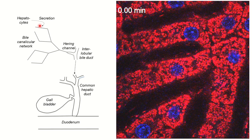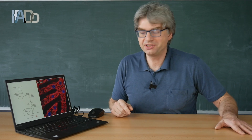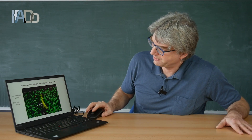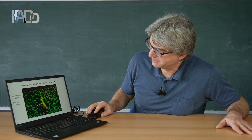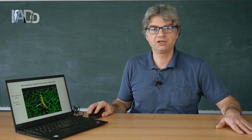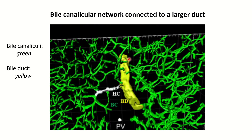From here the substance traffics further to larger channels and finally to the intestine. When we study transport in these biliary channels, it is important that we differentiate the bile canaliculi and the bile duct. Bile canaliculi, here shown in green, are very thin channels. They form a network which is connected to the larger channels, the duct.